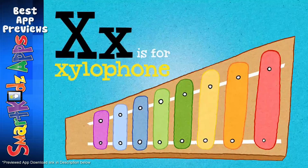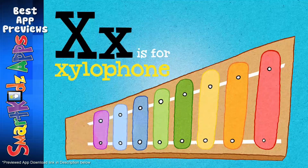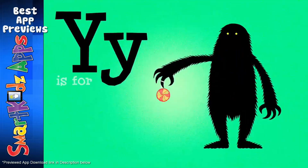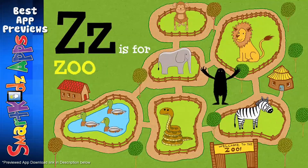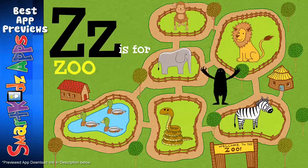X is for XYLOPHONE. Y is for yo-yo. Y, yo-yo. Z is for zoo. Z, zoo.